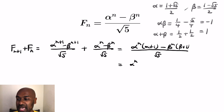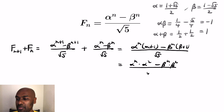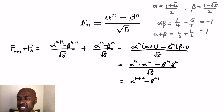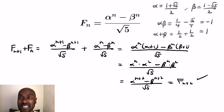So we get alpha^n · alpha^2 minus beta^n · beta^2, all over √5. Bringing the exponents together, that's (alpha^(n+2) − beta^(n+2)) / √5. That is F_(n+2) with our formula. So this indeed is an explicit formula for the Fibonacci numbers.